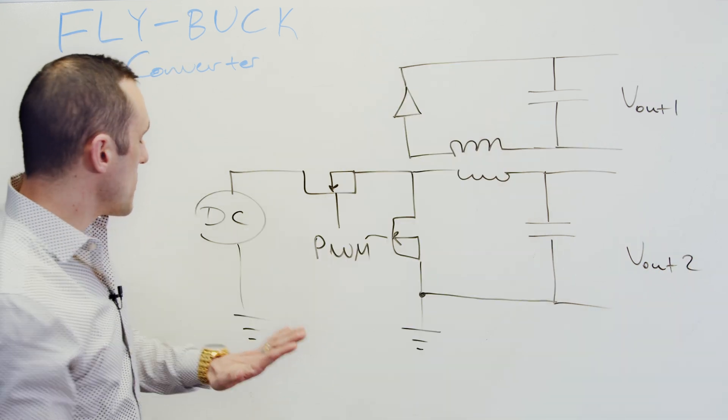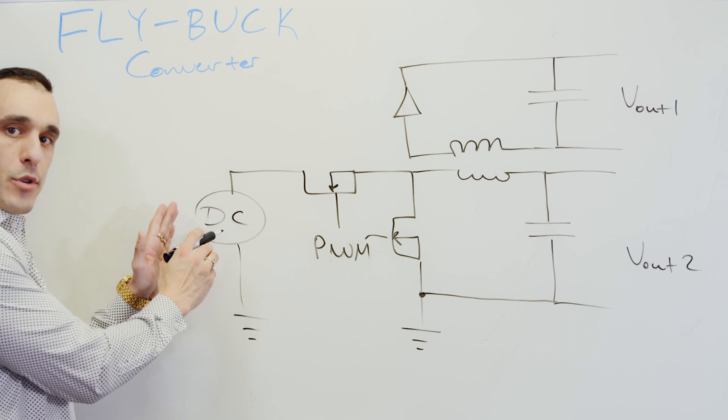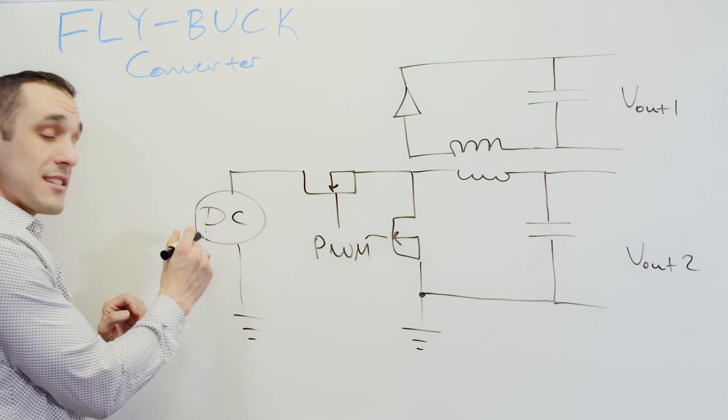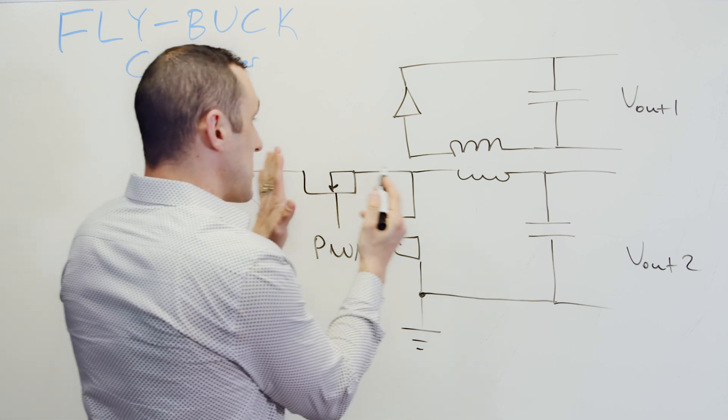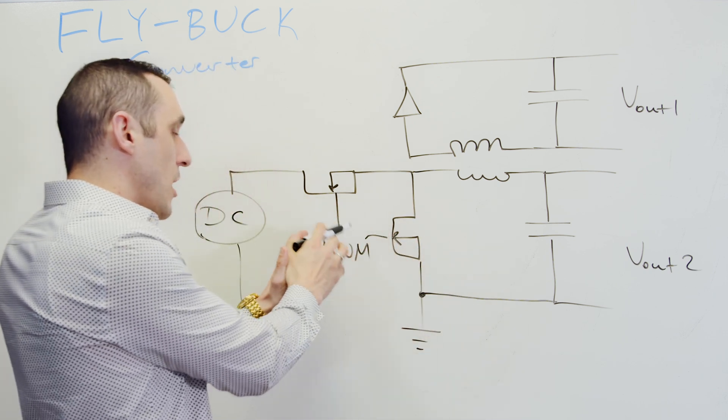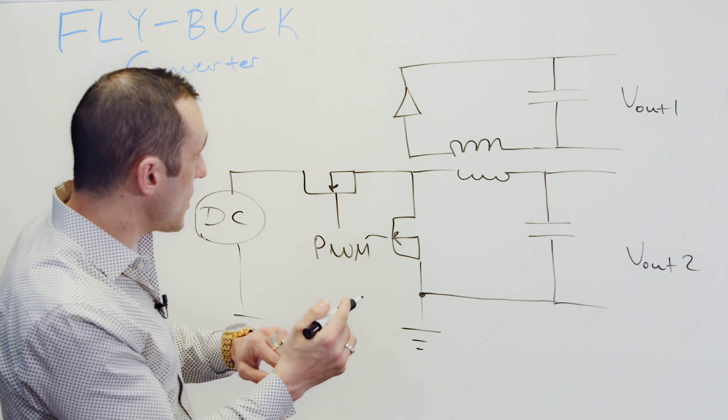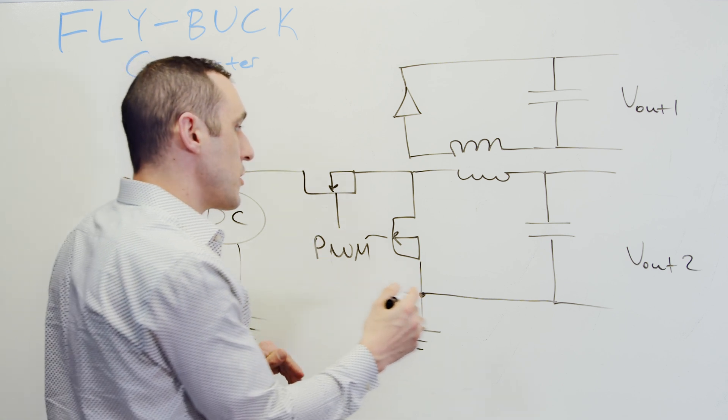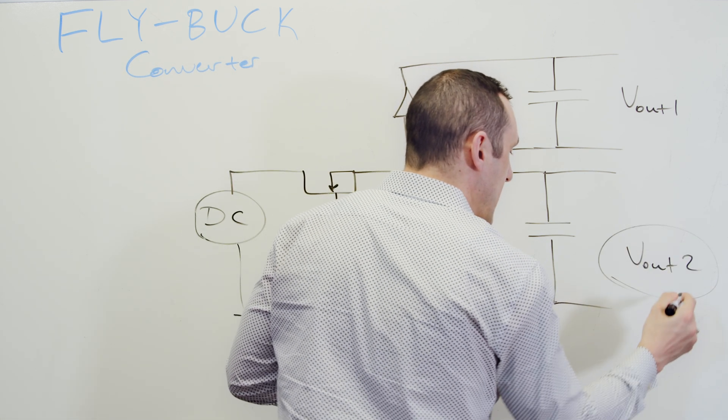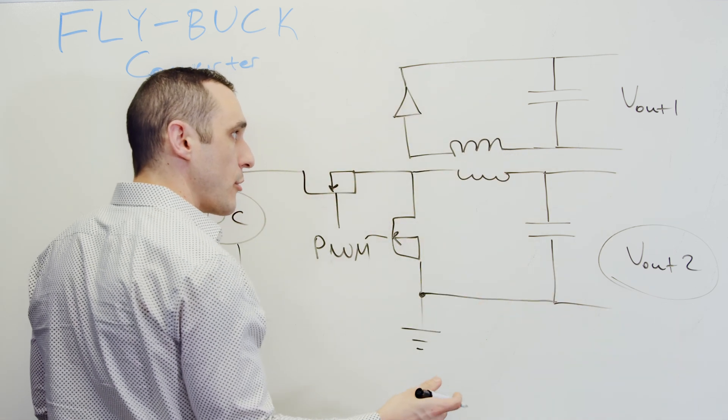So what we've done here is we've taken a DC input, and this could be a very high DC input. We've then stepped this down with the standard buck converter topology using a PWM signal. So this switching PWM signal is then going to determine the value of vout two over here on our primary rail.